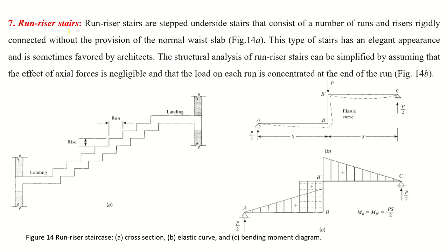The run-riser stair type has a stepped underside rather than a flat soffit — it consists of runs and risers rigidly connected without a normal waist slab. This type has an elegant appearance favored by architects. Structurally, the effect of axial force is assumed negligible and the load on each run is concentrated at its end, resisted equally by the two support points, giving a bending moment diagram with reactions P/2 at each end.